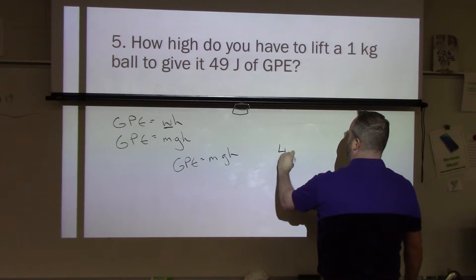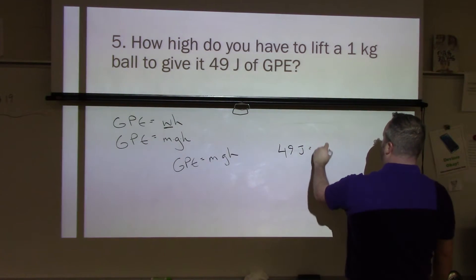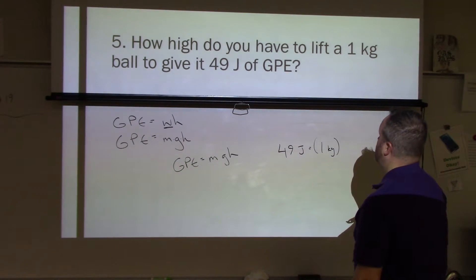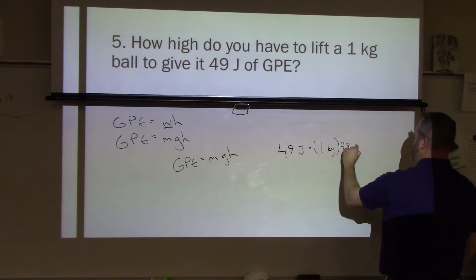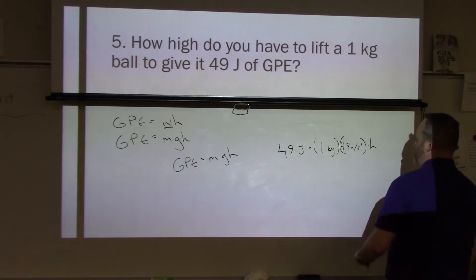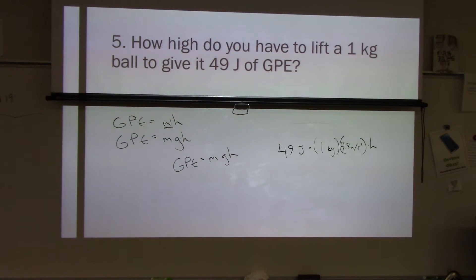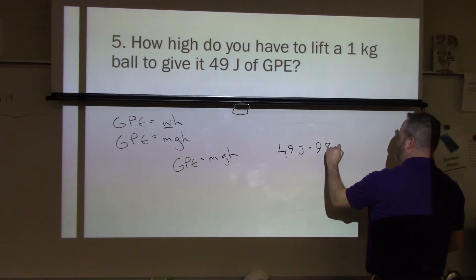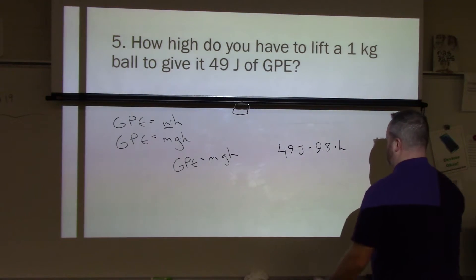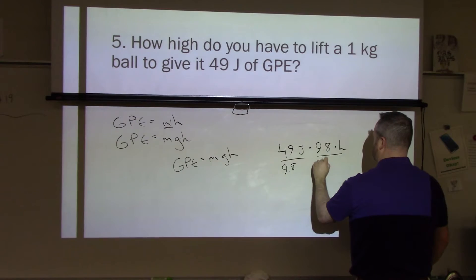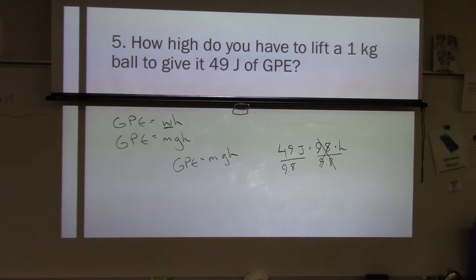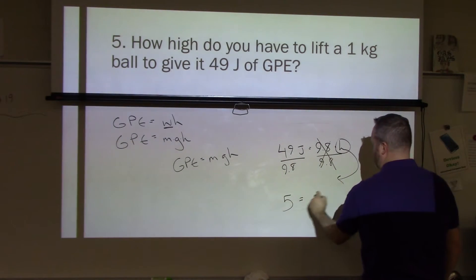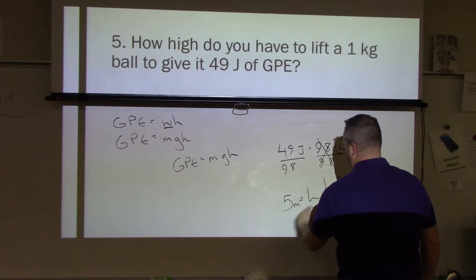So we have 49 joules is our amount of energy. We have one kilogram. Ones are usually very easy to work with. We have our gravity, which is 9.8 meters per second squared. And then we have height. We don't know what that is. That's the variable we're trying to find. So we can simplify this very easily. 1 times 9.8 is 9.8. So 9.8 times height equals 49 joules. I'm going to divide both sides of the equation by 9.8. And when I do that, I get 49 divided by 9.8 gives me 5. So 5 equals H. Remember that's 5 meters because we are using SI units.